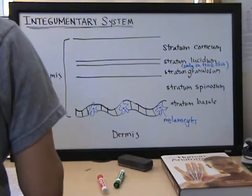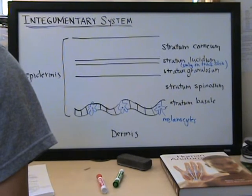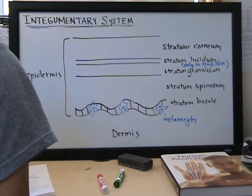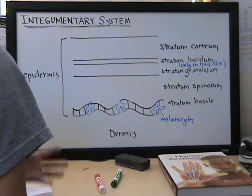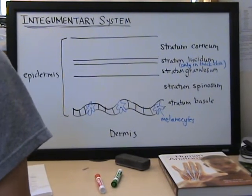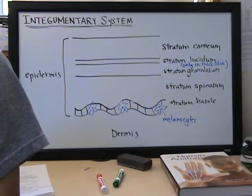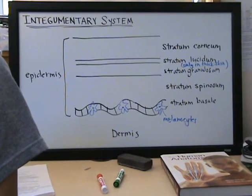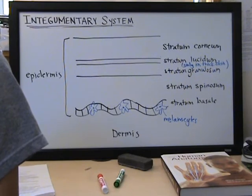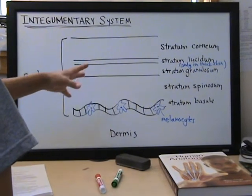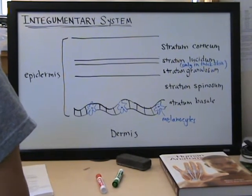All right. So we may all have the same amount of melanocytes, but they can produce different amounts of that pigment melanin. And what's the function of that melanin? The melanin helps to protect us from UV radiation because UV radiation can damage DNA and so the melanin will protect the DNA and prevent mutations from occurring.